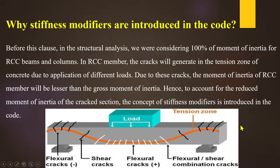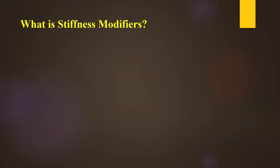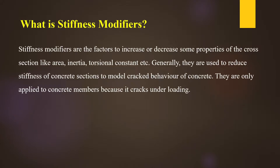When we do our structural analysis, we use stiffness modifiers. We can use certain properties to increase or decrease the member stiffness. We use properties such as area, moment of inertia, and torsional constant. These values can be modified more or less using stiffness modifiers for concrete sections.